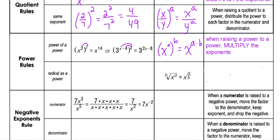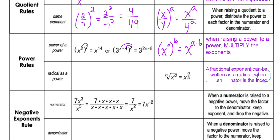We can also have a radical as a power, which we'll use more in another lesson. Essentially, a fractional exponent can be written as a radical where the denominator is the index on the radical. So the index becomes the denominator of the fractional exponent, and you keep the same numerator.